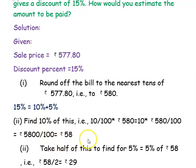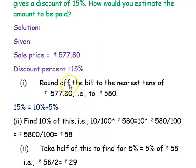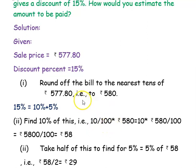For 10 percent, we can write it as 10 percent of the sale price. 10 percent means 10 multiplied by 1 divided by 100, then multiplied by the sale amount which we have rounded off to rupees 580.